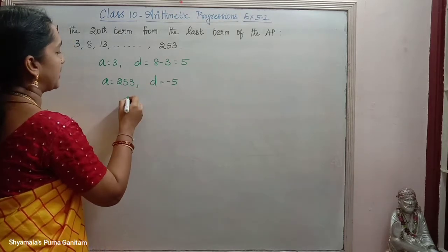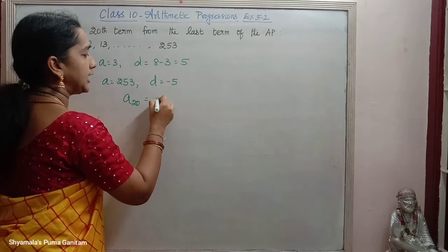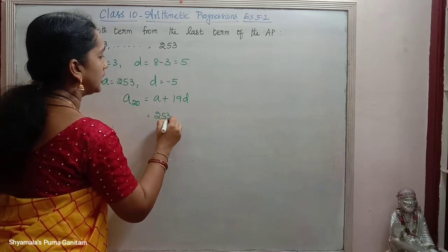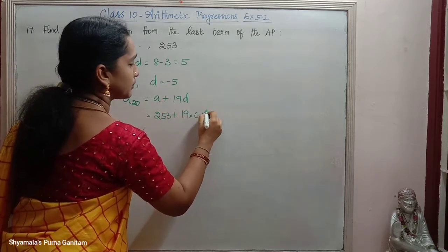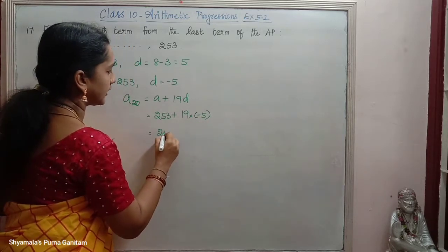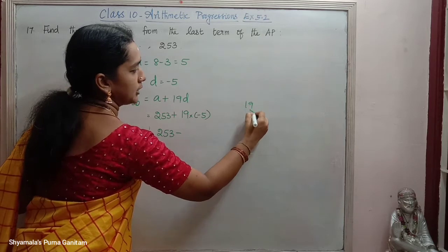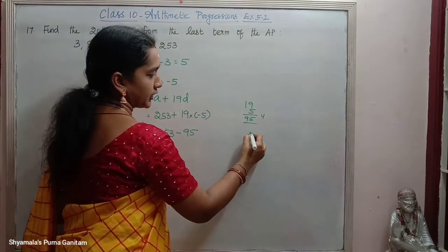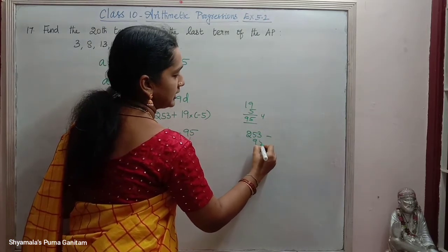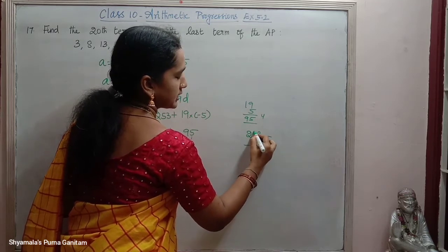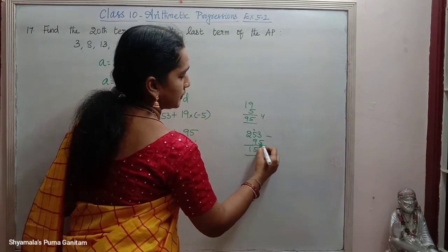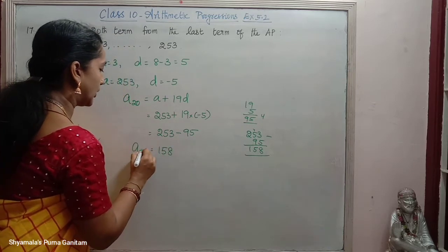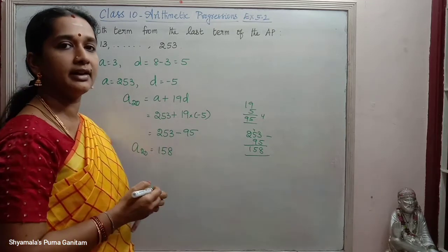So A20 equals A plus 19D. That gives 253 plus 19 into minus 5, which is 253 minus 95. Computing: 253 minus 95 equals 158. So the 20th term from the last is 158.